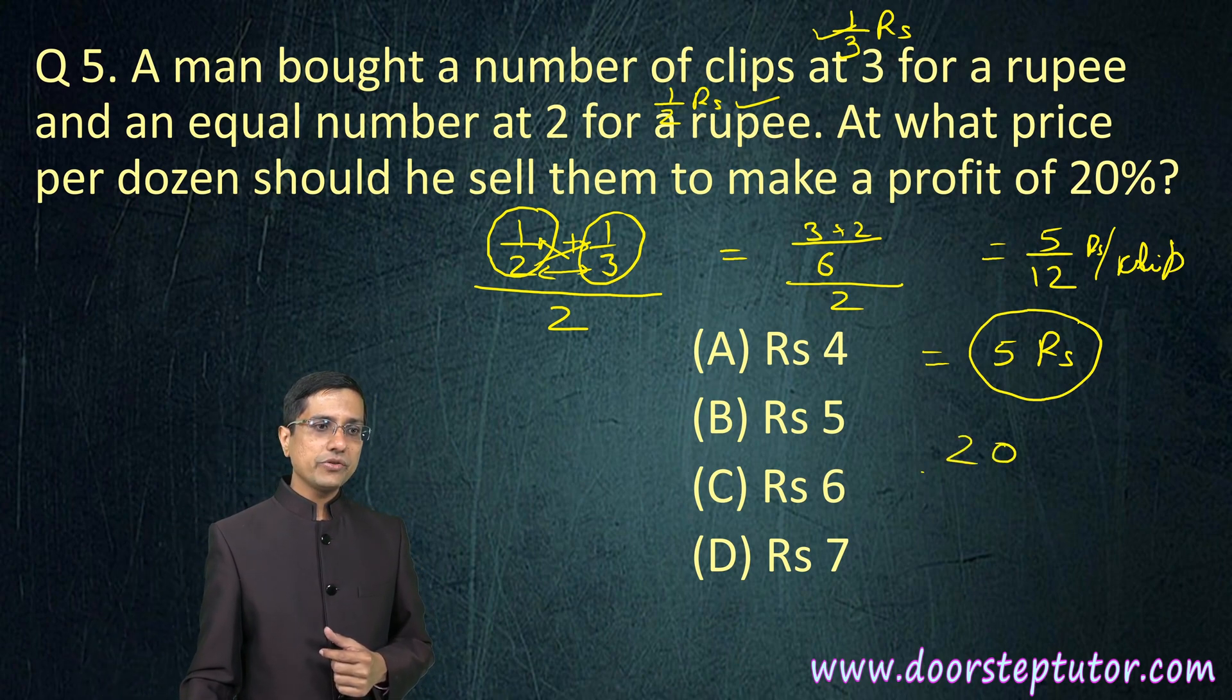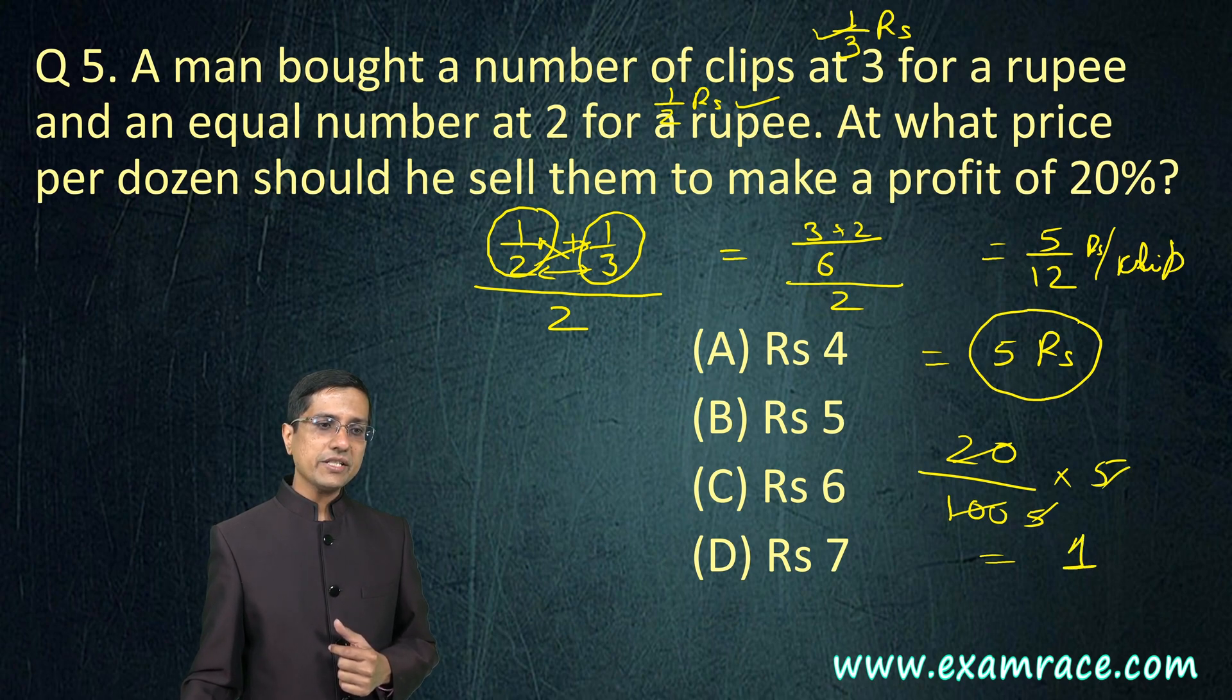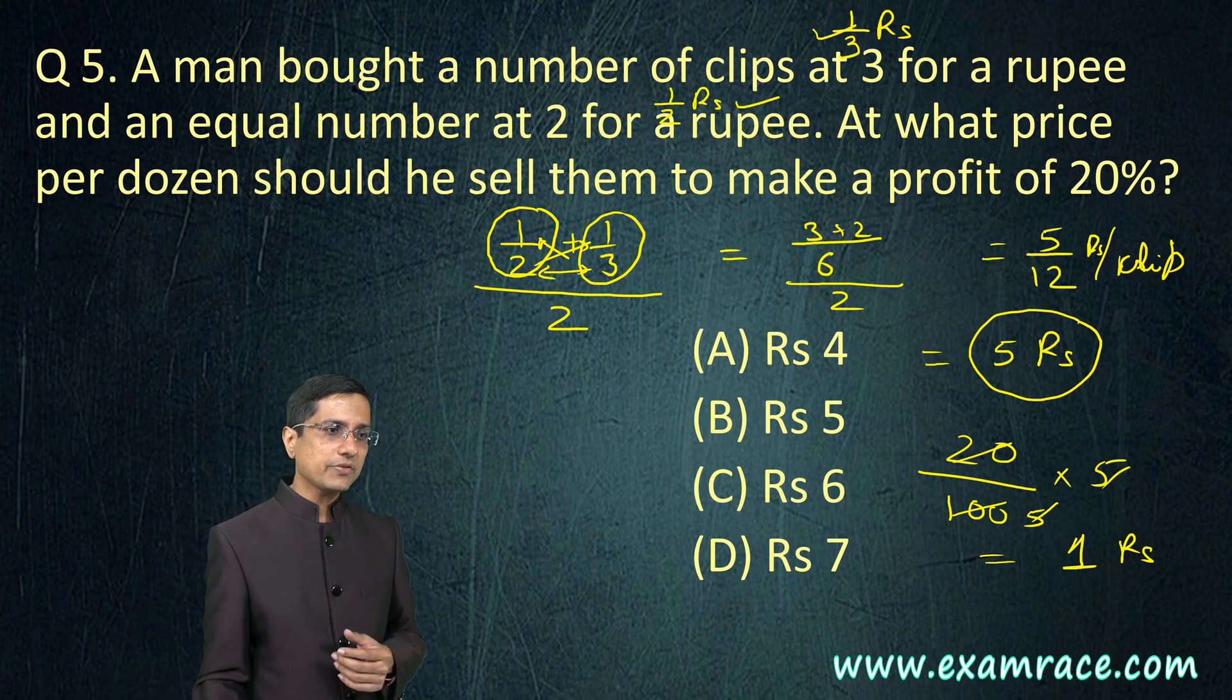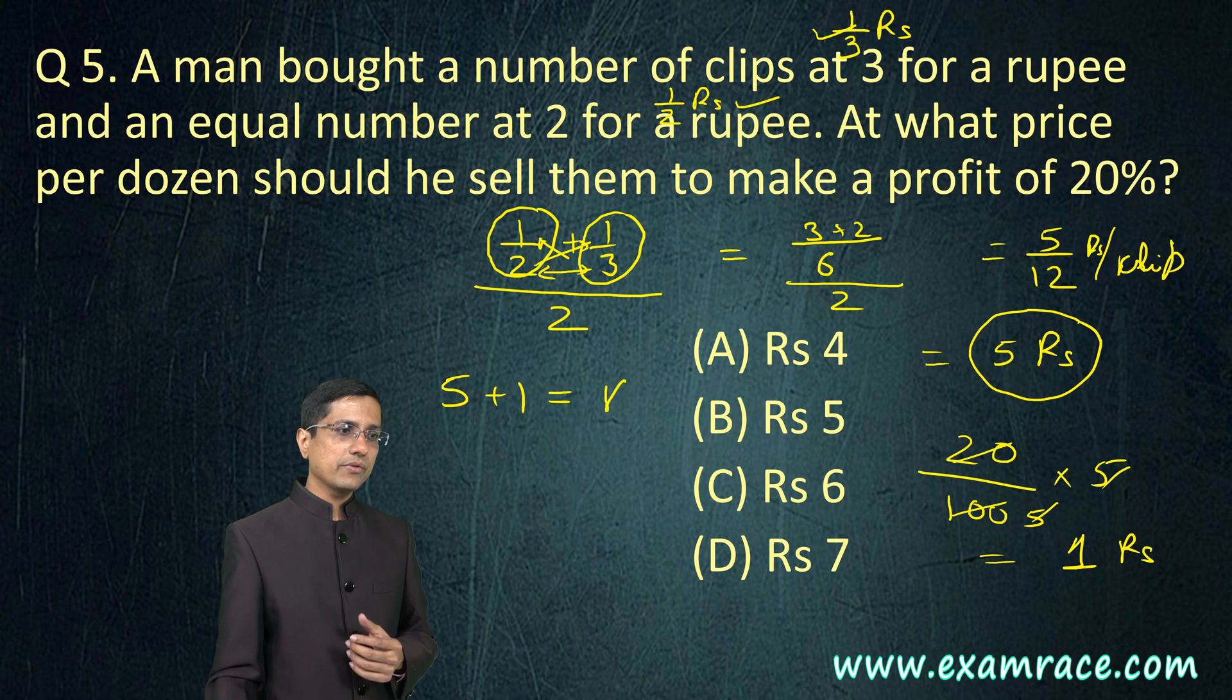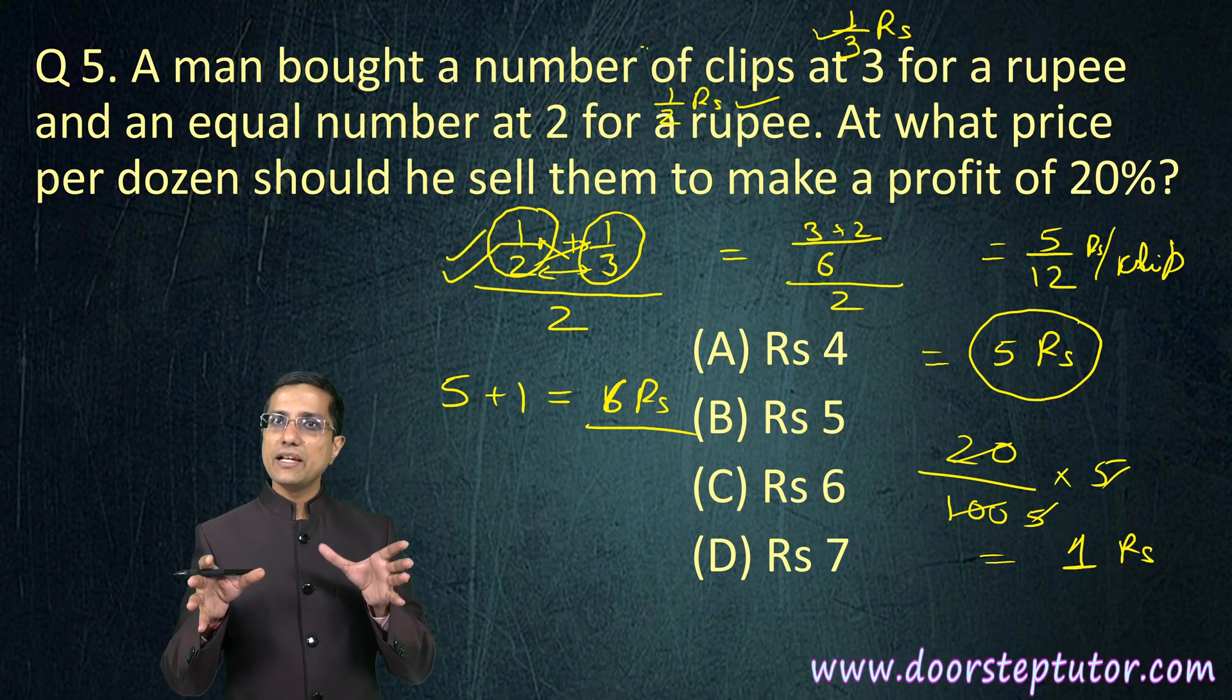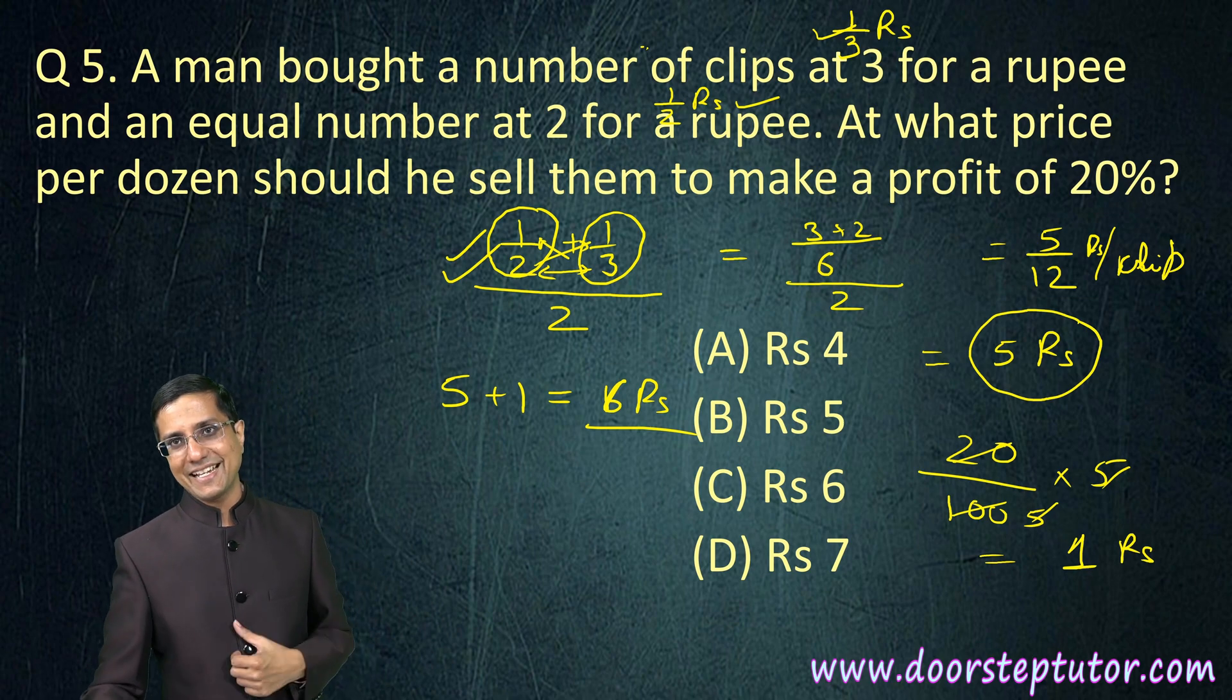Now I need to make a profit of 20 percent on it. So 20 percent of 5 rupees: this comes out to be 20 divided by 100 into 5, which becomes 1 rupee. So that is the profit. What would be the selling price? Selling price would be 5 plus 1 which equals 6 rupees. That is the answer. The trick here was to realize that we need to calculate the average cost. So this first step was the real important thing - the average.